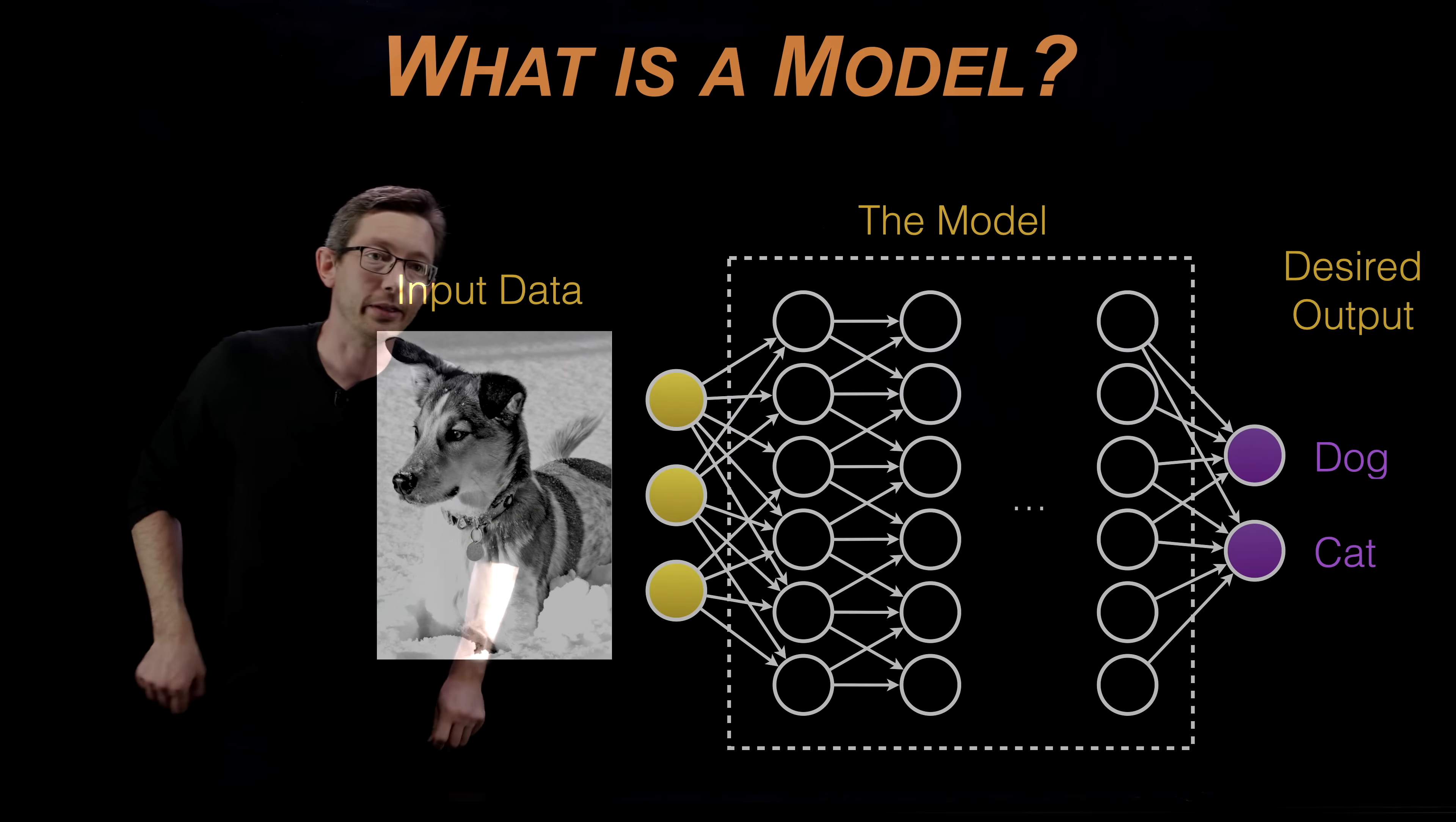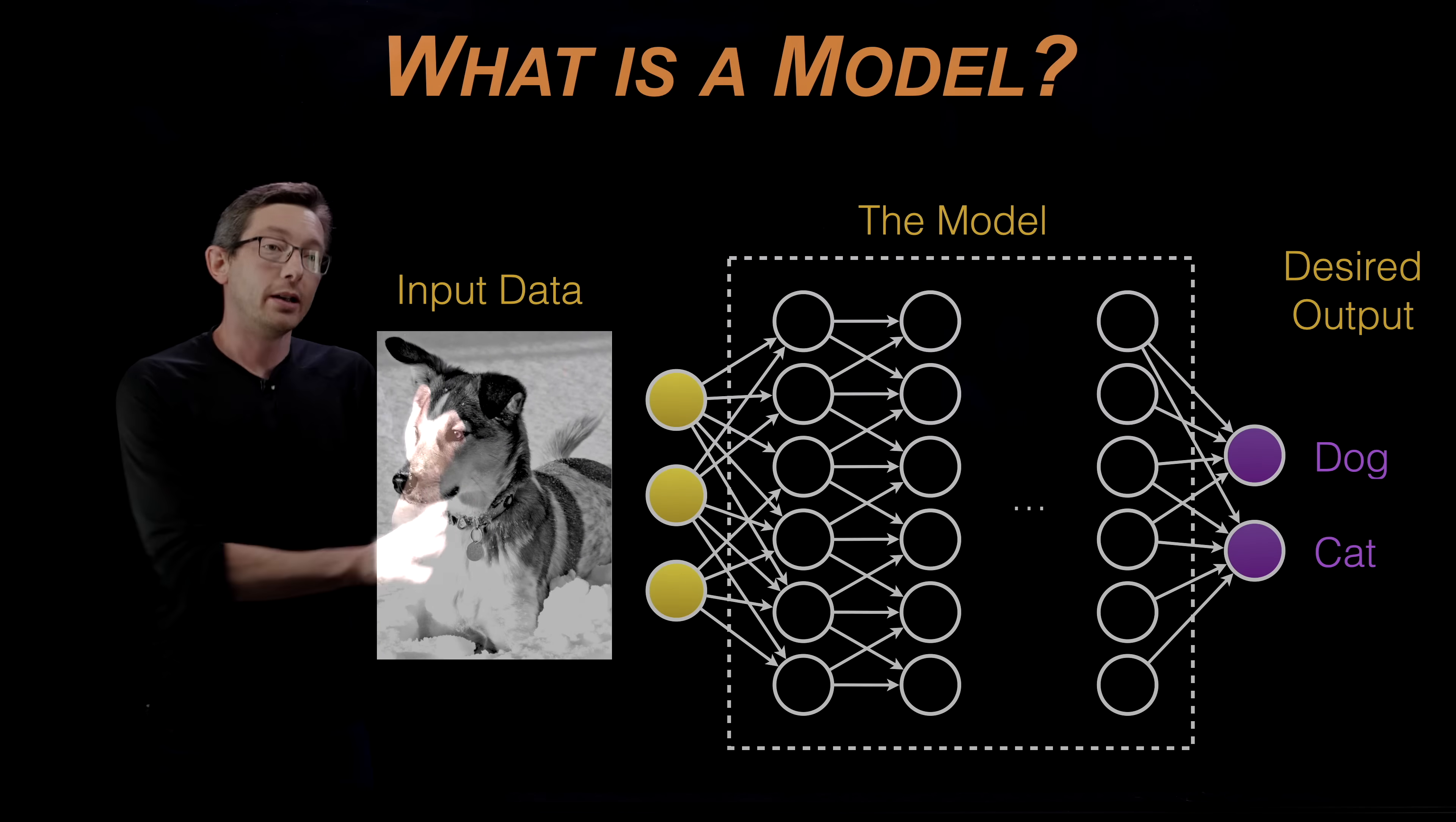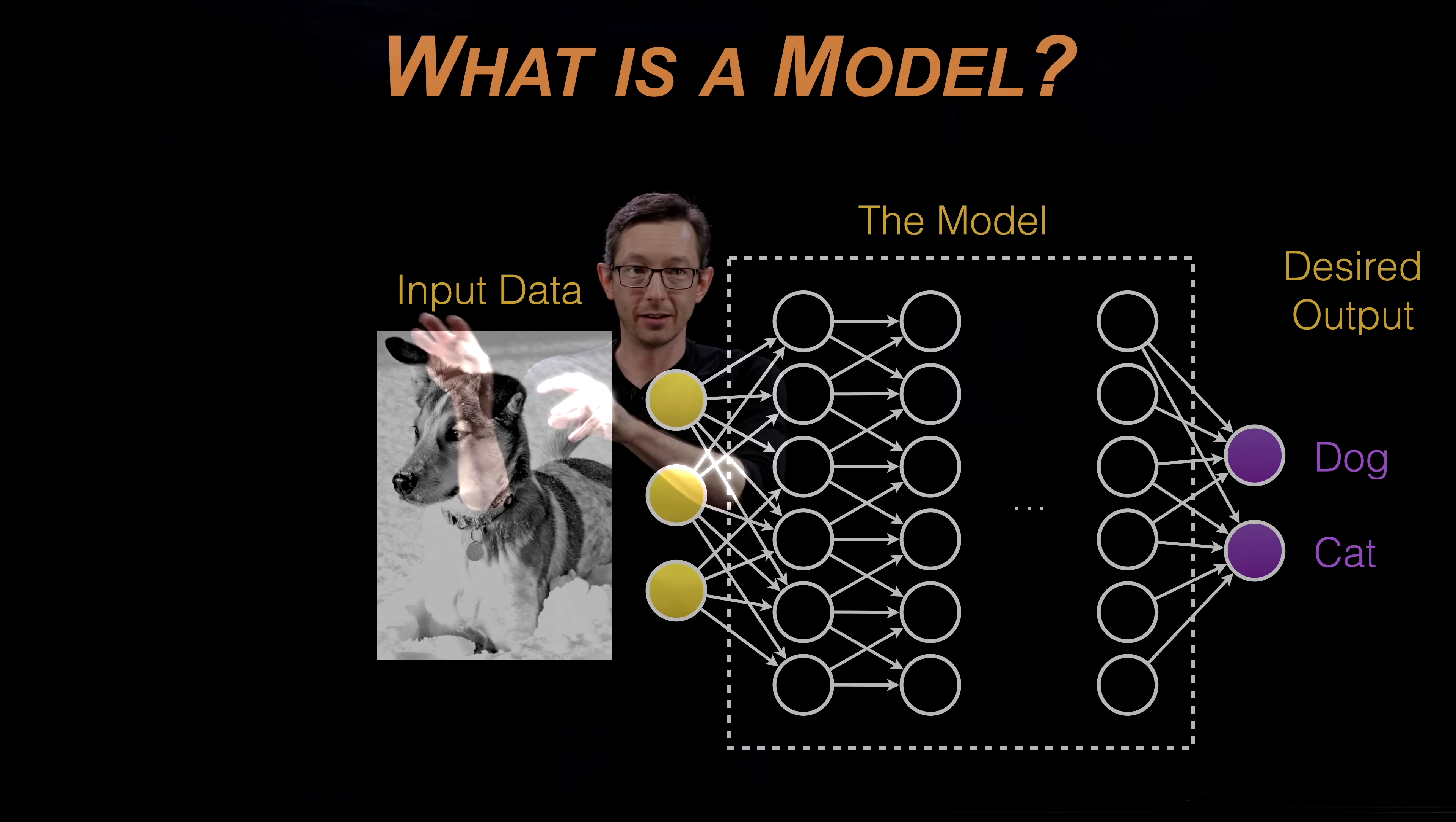In this example, the input data might be a high-resolution image of either a dog or a cat. This is our dog, Mordecai. The input data would get fed into the model. The model would be some function of x, where x is my input data. This model would do a number of computations on that data. It might run a little convolutional filter across it. It might look for ears and snouts.